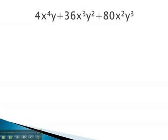In this problem, we see that the 4, 36, and 80 are all divisible by 4. There is also an x² that we can factor out, along with a y.